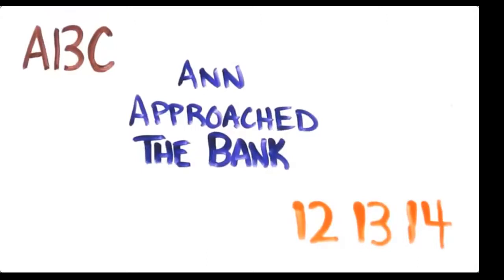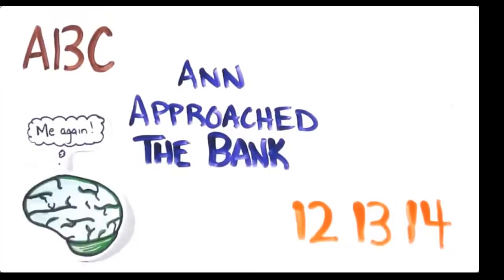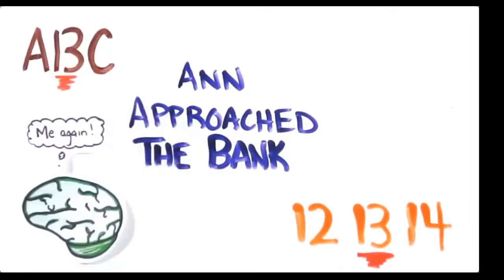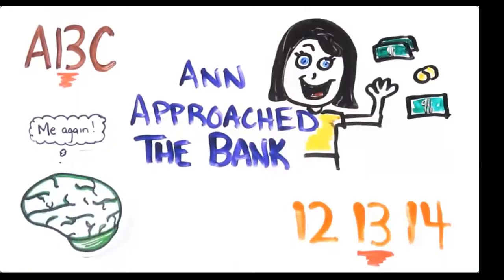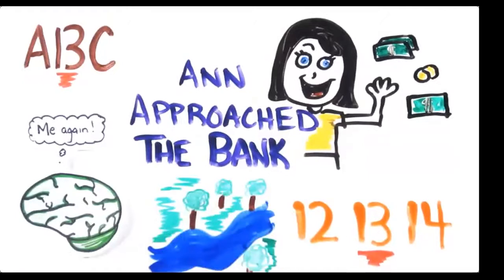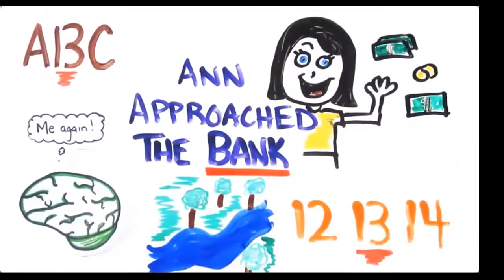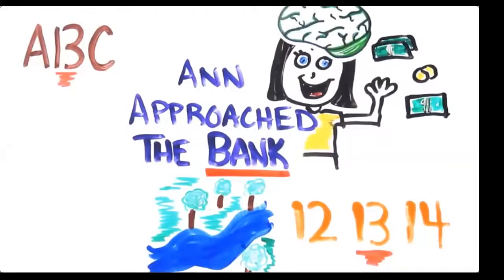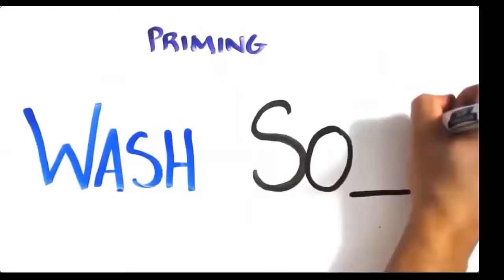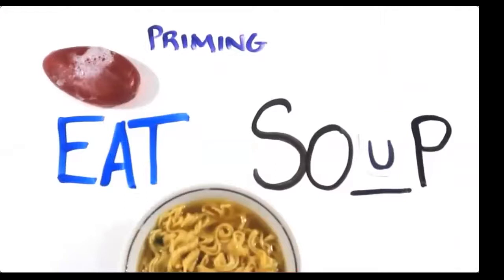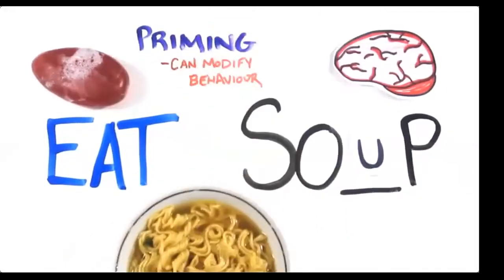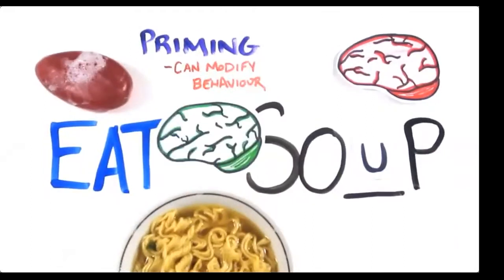Reading each of the following may seem fairly simple: A, B, C... Anne approached the bank... and 12, 13, 14. But your brain actually interpreted these ambiguous statements without you knowing. You could have read it as A, 13, C or 12, B, 14, but your brain created the context unconsciously. Also, you likely imagined a woman walking towards a building with tellers — but if the sentence before was 'they were floating gently down the river,' the scene would have changed because 'bank' is no longer associated with money. This ties into a concept called priming. For example, if I said 'wash,' you'd likely complete the word fragment as 'soap,' but if I had just shown you 'eat,' you'd be more likely to see 'soup.' Both 'eat' and 'wash' prime your thoughts. Priming effects have even been shown to affect and modify behavior, arising in system one with no conscious access to them.